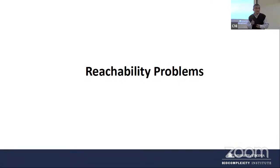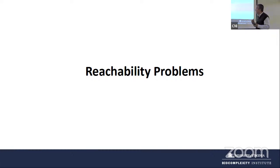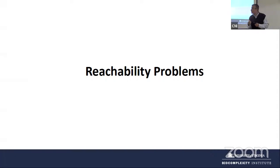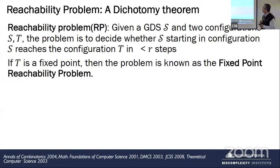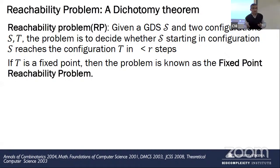Let me take a couple of examples. We started this program back in 1998. The reachability problem is very simple: you are given two configurations S and T, and you are asked whether the system starting at S will reach T in some number of steps. The number of steps has to be specified. If T is a fixed point, can the system reach that fixed point? That's basically the reachability question.